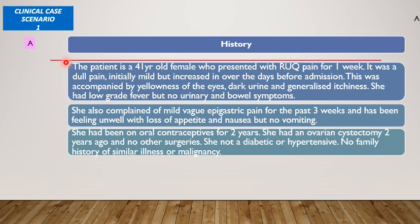The patient is a 41-year-old female who presented with right upper quadrant pain of the abdomen for one week. It was a dull pain, initially mild but increased in severity over the days before admission. This was accompanied by yellowness of the eyes, dark urine, and generalized itchiness of the skin. She had low-grade fever but no urinary or bowel symptoms. She also complained of mild vague epigastric pain for the past three weeks and had loss of appetite and nausea but no vomiting.